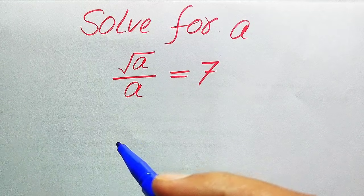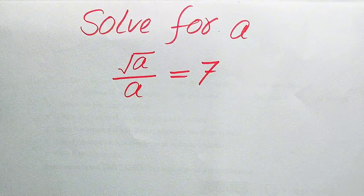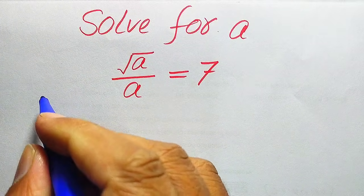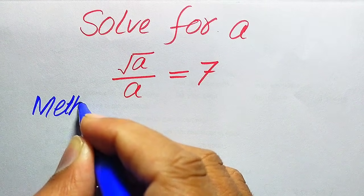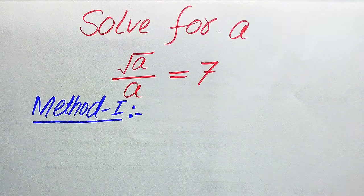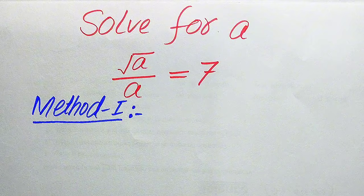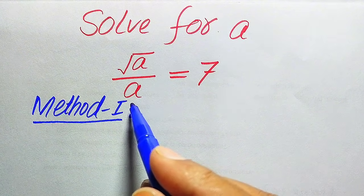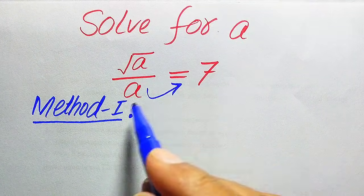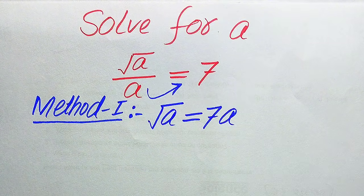First we need to find all the roots of this equation, and at the end we will verify which of the roots are solutions and which are extraneous roots. We solve this problem using two methods. In the first method, this a is divided on the left-hand side; when we move it to the right-hand side it is multiplied by 7, so it will be written as square root of a equals 7a.